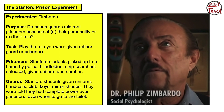For the prisoners, these students were picked up from home by police, blindfolded, strip searched, deloused, and given a uniform and a number — all things that made this experience as real as possible. Participants assigned the role of a guard were given a uniform, handcuffs, clubs, keys, and mirror shades to hide their identity.